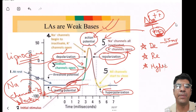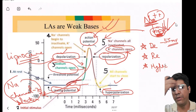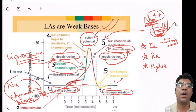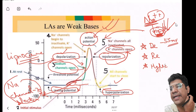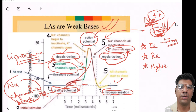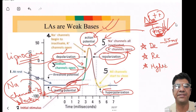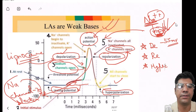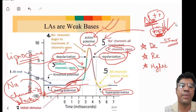When lignocaine attaches to the sodium channel, it hinders their ability to allow sodium to enter the neuron. During depolarization, fewer sodium ions can flow through the blocked channel. As a result, the rate and extent of depolarization is decreased. The neuron struggles to reach the threshold necessary to generate an action potential as the sodium influx is hindered. Lignocaine also alters the resting membrane potential by blocking sodium channels in the inactive state.